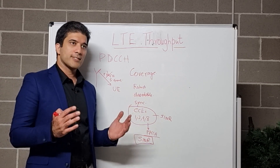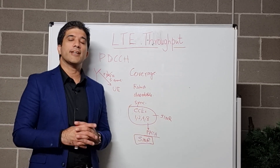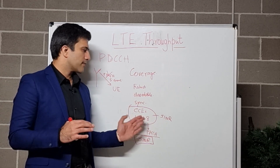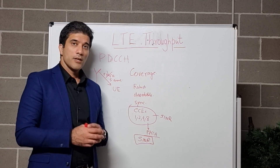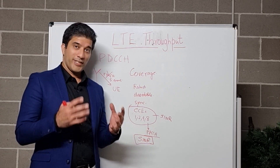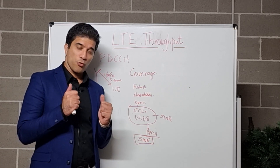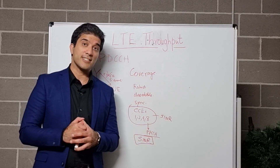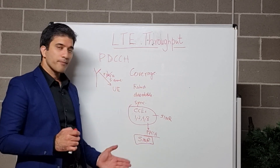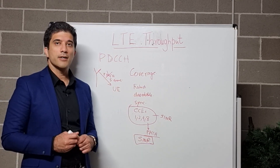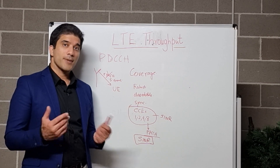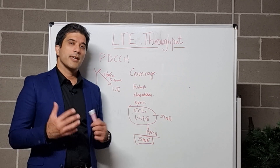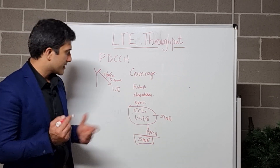What you can do to improve this situation is tune your thresholds for the selection of the particular CCE. If you have a site covering a very large area, you can tune this scenario so that your UEs get the most robust CCEs for the transmission of PDCCH. This is how you address the coverage part.